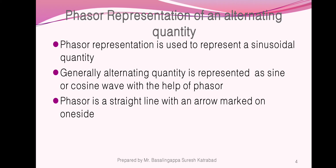First we will see phasor representation of alternating quantities. Phasor representation is used to represent a sinusoidal quantity. Generally, alternating quantities are represented as sine waves or cosine waves. With the help of phasors, a phasor is a straight line with an arrow marked on one side.